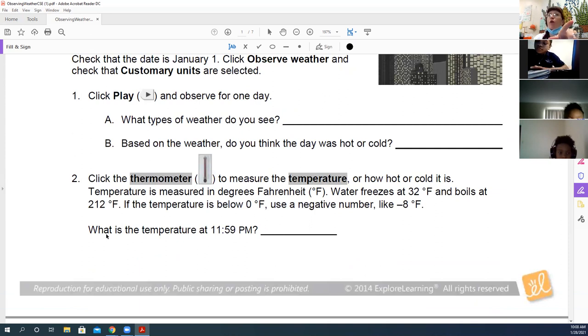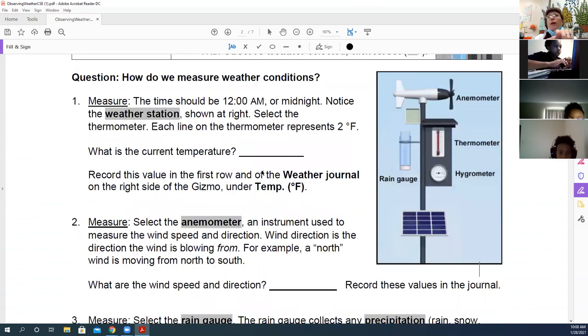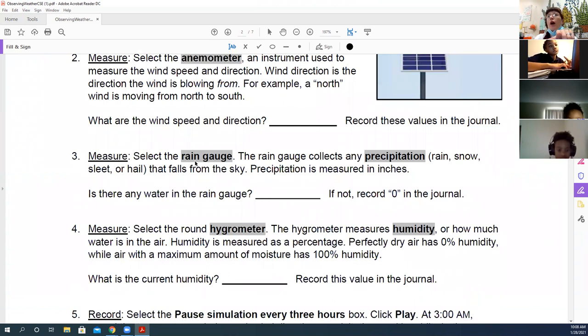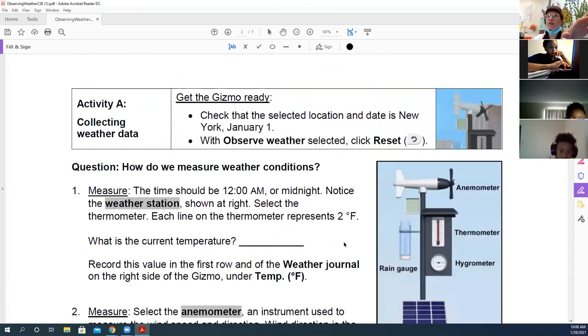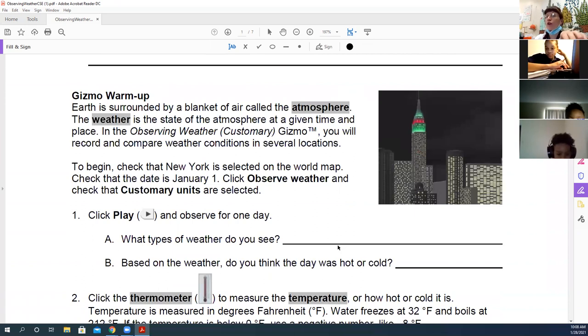So we're going to do our warmup to kind of get us acclimated. It should be very simple because we're just recording the data that we see, the temperature, the wind speed and direction, the rain gauge, what the humidity is. So just the values that we're seeing in these different tools. I'm going to go ahead and open it up, open up the gizmo, and then I'll let you guys get started with your partner. You have the entire class period to work.